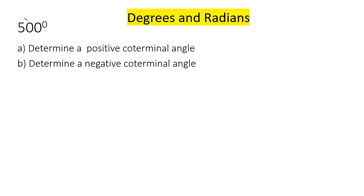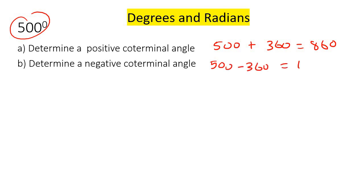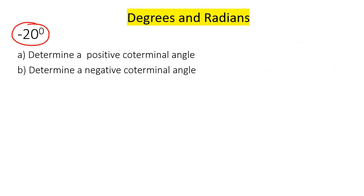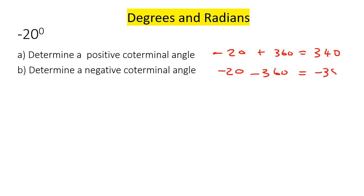Now here you've got to be careful. To find the positive one, you could add 360, or even subtract 360 because that would still be positive. But for the negative one, if you just minus 360 that gives you 140, which is not negative. So you just minus 360 again — because remember, you can add or subtract as many 360s as you need — and that gives us negative 220. Next: negative 20. Add 360 to get positive 340. Subtract 360 to get negative 380.